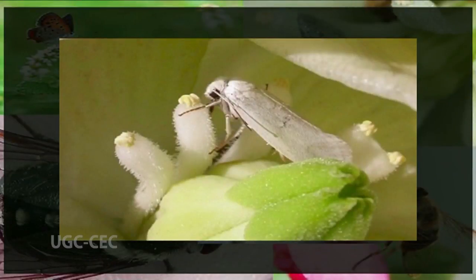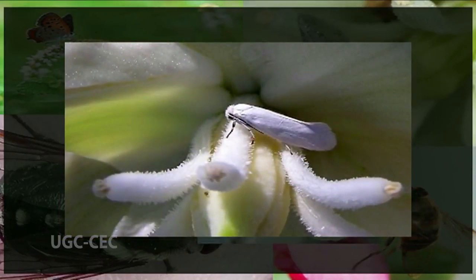Moths are nocturnal, have a good sense of smell, and are hover feeders. The flowers they pollinate are white or pale in color so they are visible at night and may only be open at night. Typically these flowers have a strong sweet scent, again possibly only at night, and deep tubes to match the length of the appropriate moth's tongue. The petals are flat or bent back so that the moth can get in.